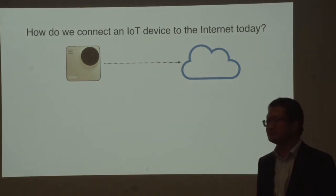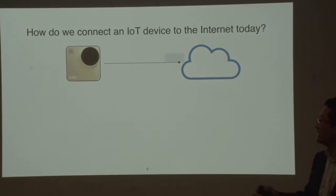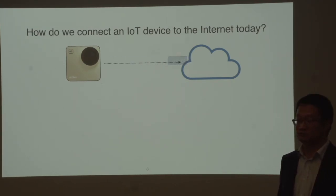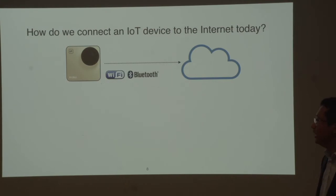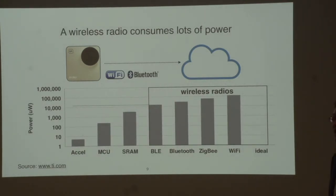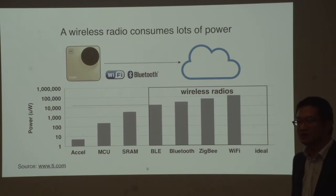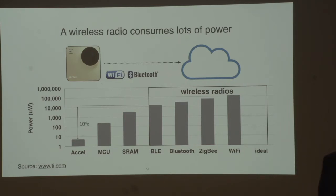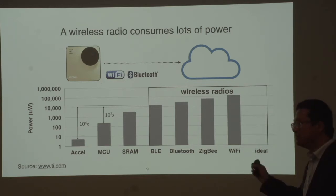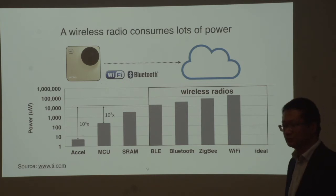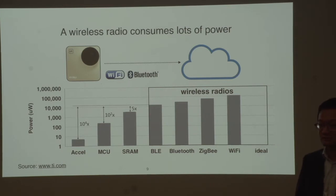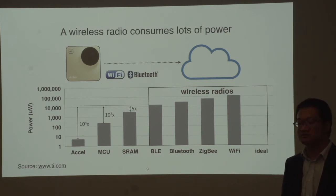How do we connect to the internet today? When we connect IoT devices to the internet, we usually use Wi-Fi or Bluetooth, but both consume lots of power. This figure shows the power consumption comparison between the wireless radio versus other modules in an embedded system. Even the most power-efficient radio, Bluetooth Low Energy, consumes four orders of magnitude more power compared to a simple accelerometer sensor, two orders of magnitude more than a microcontroller, and five times more than SRAM. As a result, the wireless radio has become the bottleneck for reducing overall system power consumption.